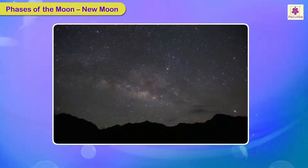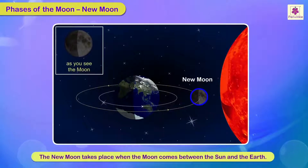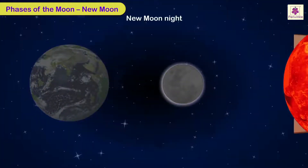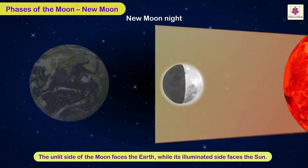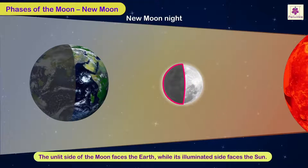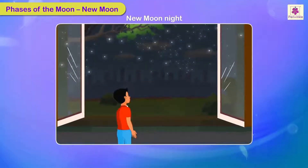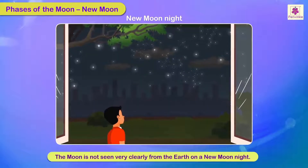New Moon. The New Moon takes place when the Moon comes between the Sun and the Earth. During this time, the unlit side of the Moon faces the Earth while its illuminated side faces the Sun. Therefore, the Moon is not seen very clearly from the Earth on a new Moon night.